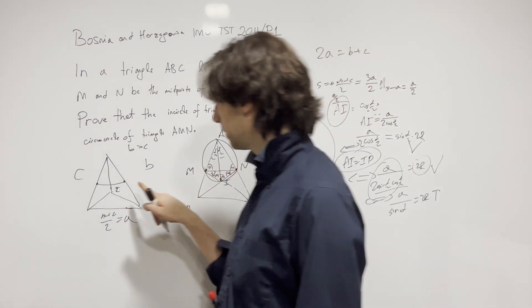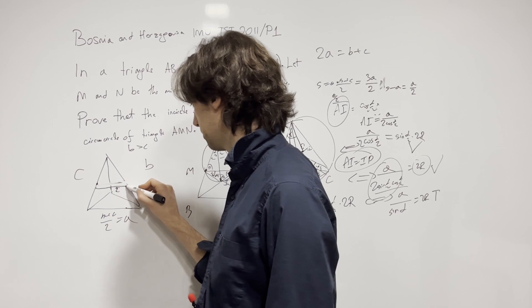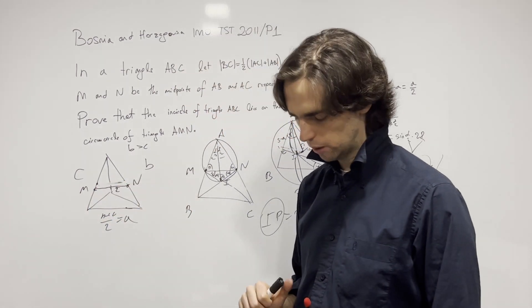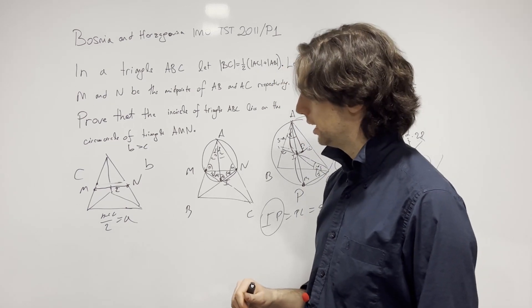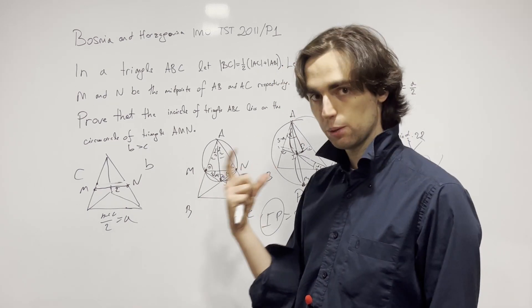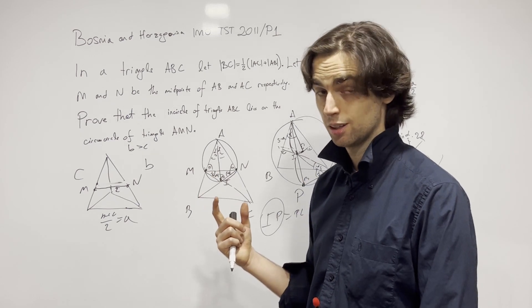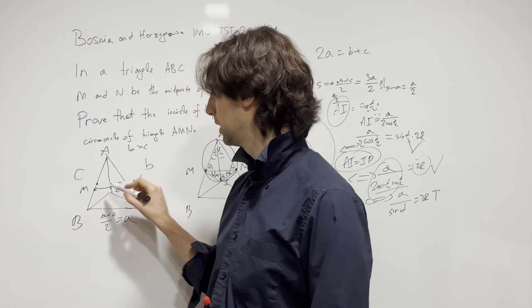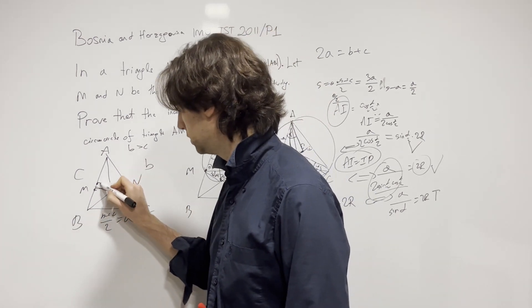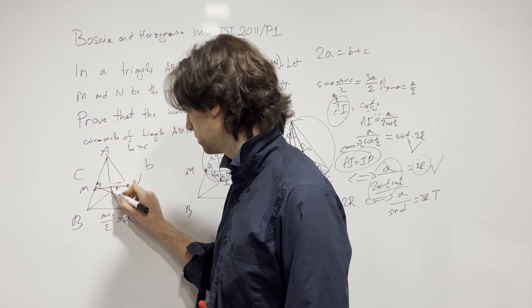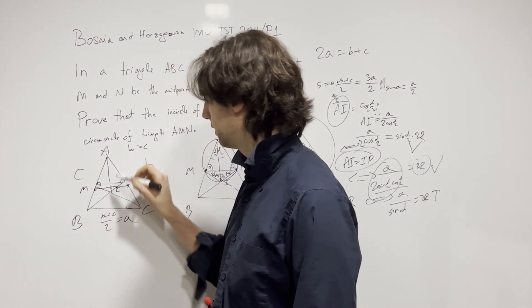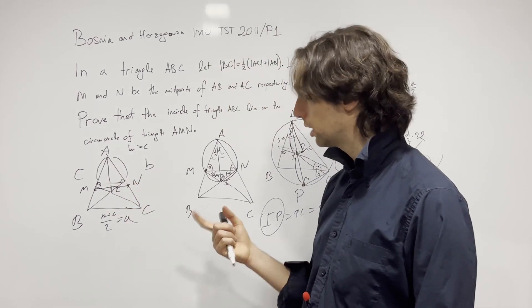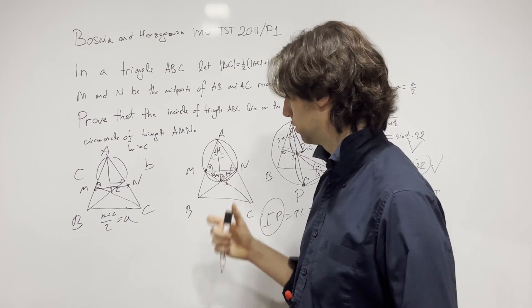The midpoints are somewhere here on AB and AC. So how do we go about proving IM equals IN? The answer is: what can we use about I? We can use the fact that I is on the angle bisector, which means when we drop perpendiculars to AB and AC, we get S minus A equal on both sides — that is, A minus A/2 on both sides.